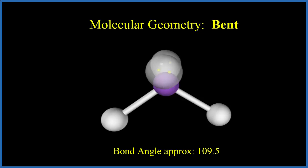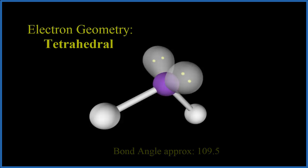With the lone pairs, we can look at the electron geometry, and the electron geometry is tetrahedral.